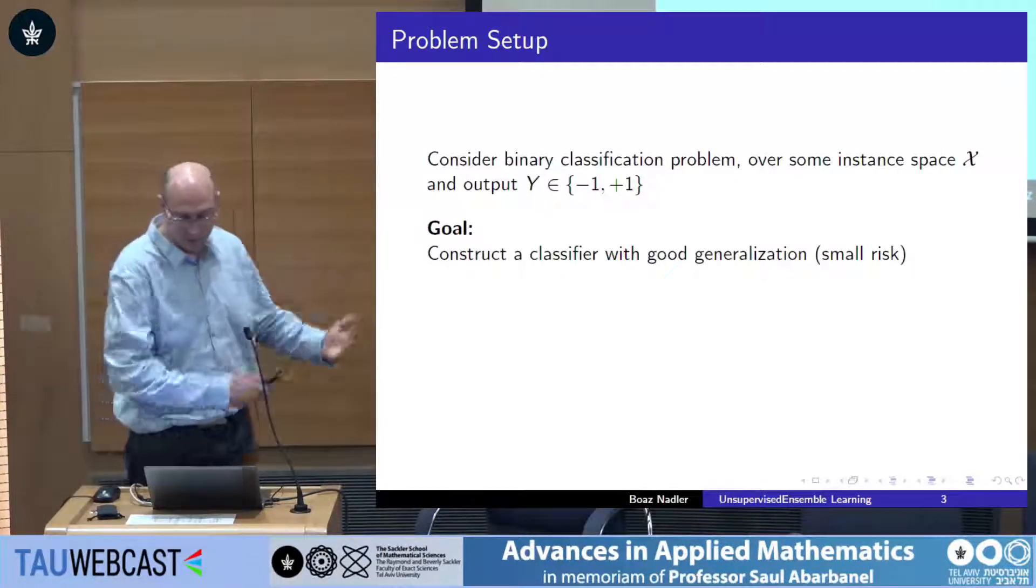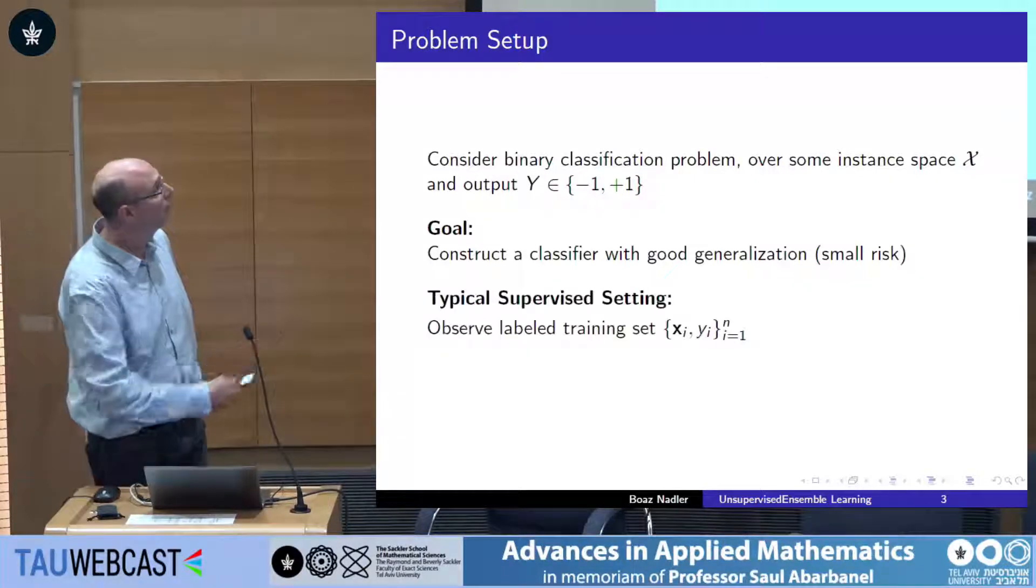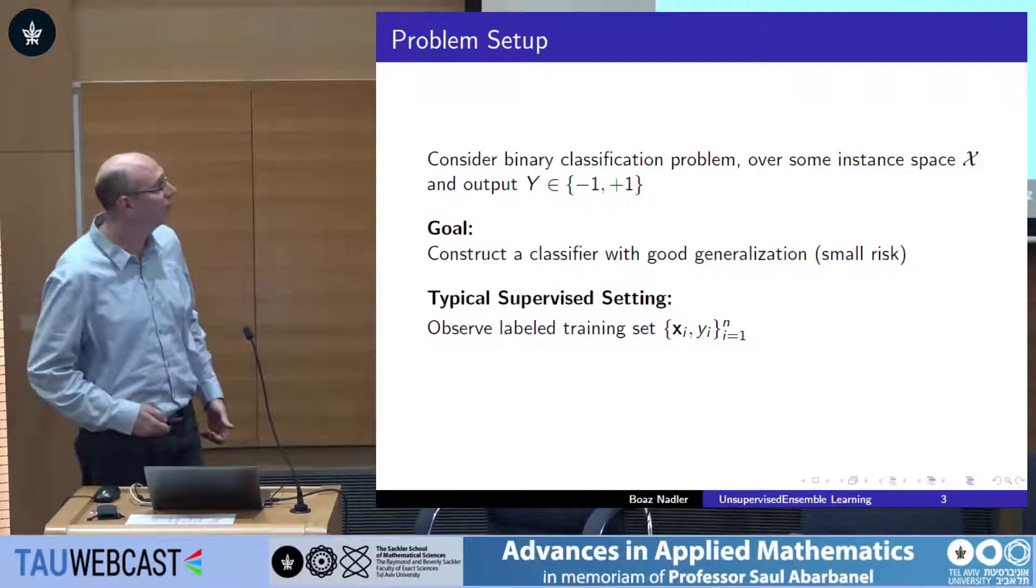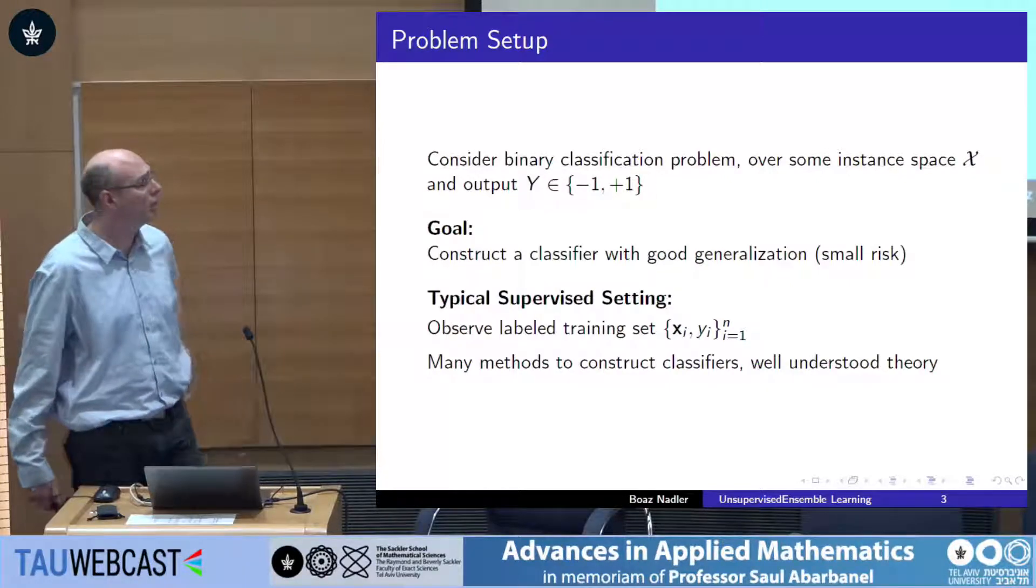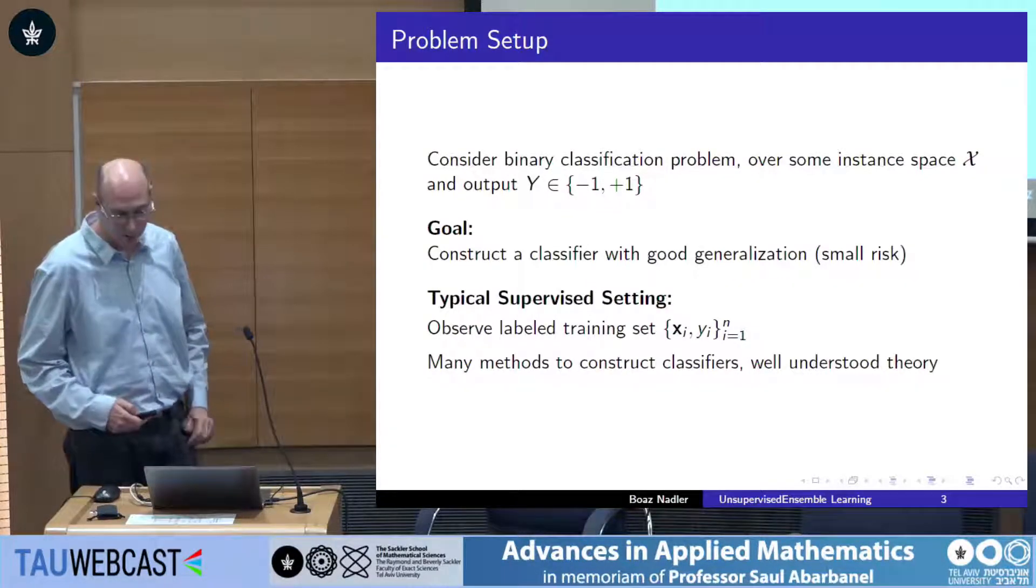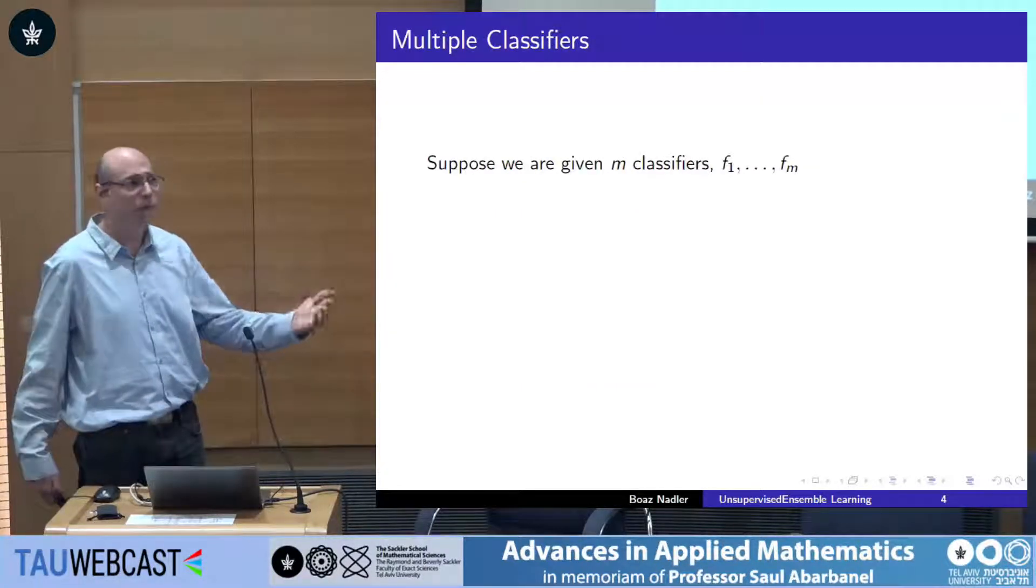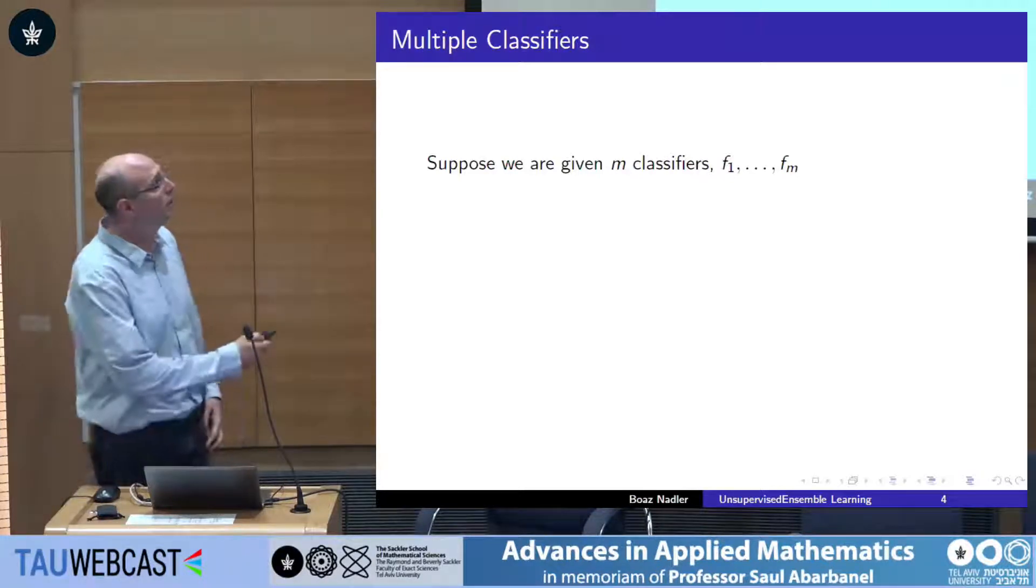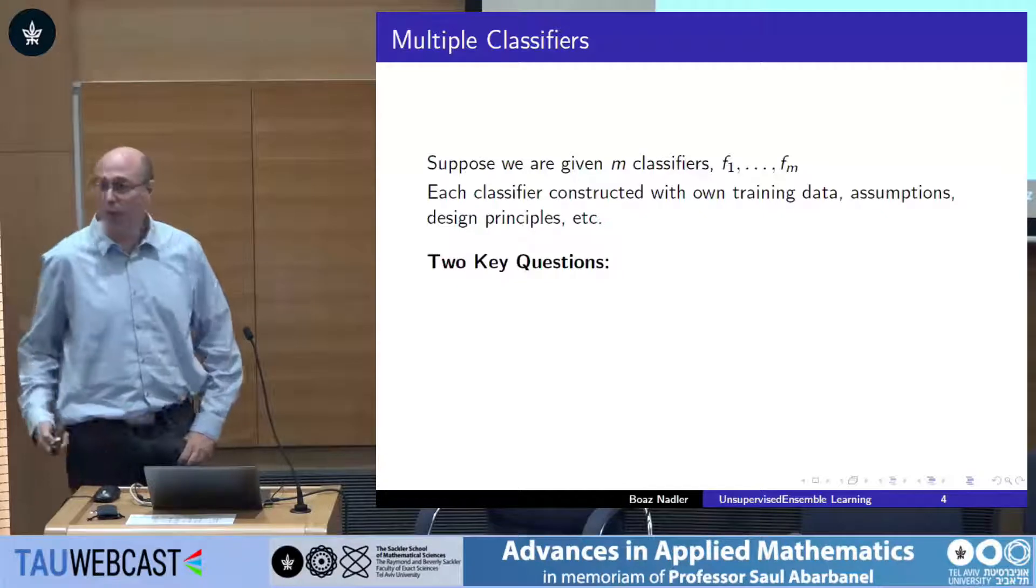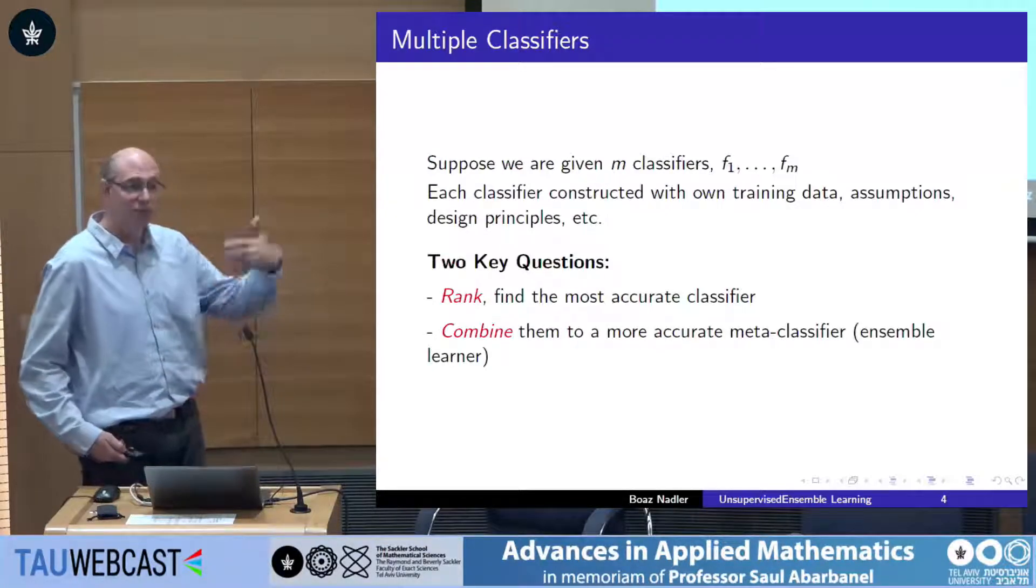And of course, the goal in machine learning is to construct a classifier that would have good generalization performance, small risk, small prediction error. The typical way it's done is called supervised learning. There is some label set. You have some examples positive, some examples negative, and you somehow construct a classifier. There are many different methods to do so, and also relatively well understood theory. This morning we had a talk that described how to do it for a certain application. So if there are so many different methods to construct classifiers, one can think about a setting where you have m different classifiers or experts, and maybe each one was constructed in a different lab or with its own data and assumptions.